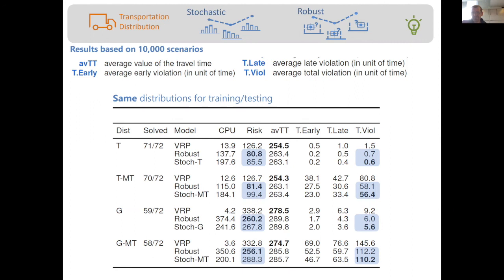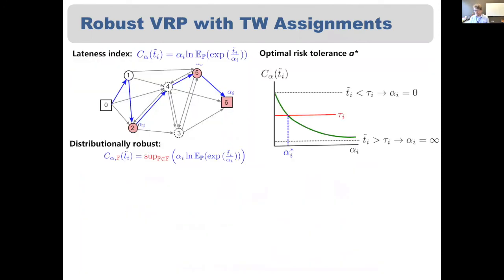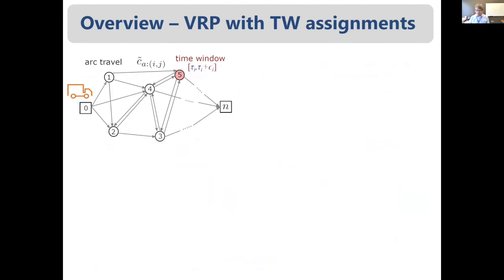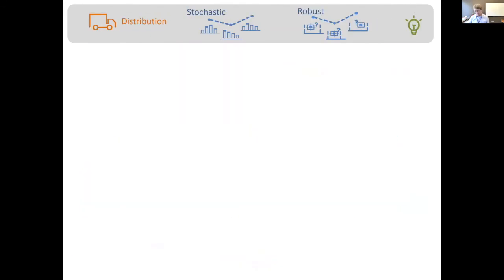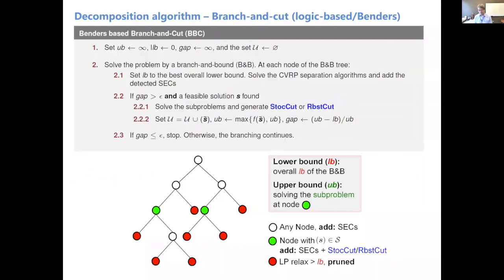Another question: in your logic-based Benders where you're searching a single tree, do you have cut management — removing cuts or putting them in a bin so they're not used, to make the relaxation solve faster? Do you have any insight as to where the cuts...